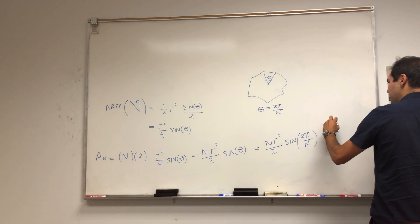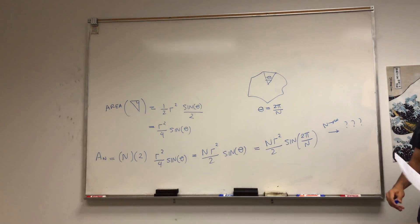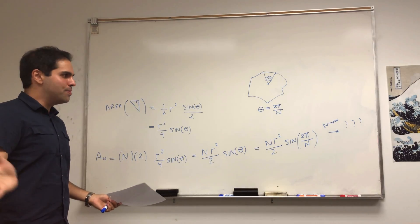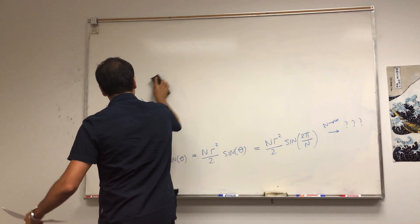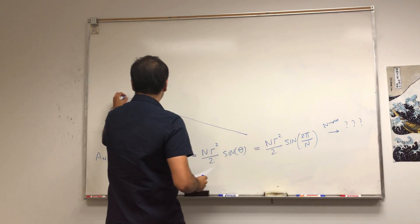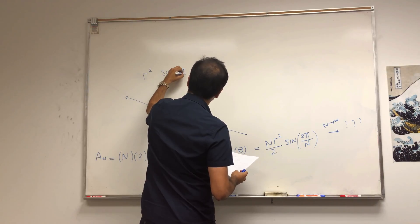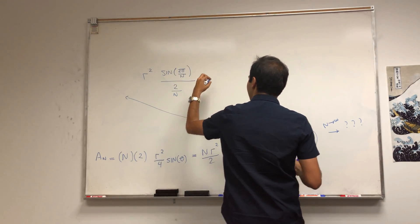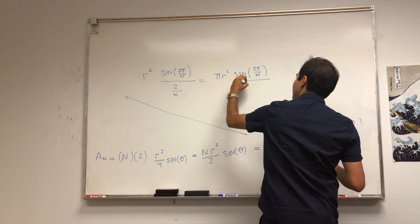Now we want to take the limit as n goes to infinity of A_n = n·r²/2 · sin(2π/n). We have an issue because this is infinity times zero, an indeterminate form. We could use L'Hôpital, but we don't even need to. Let's rewrite it: r² · sin(2π/n) over (2/n), then multiply top and bottom by π to get π·r² · sin(2π/n) divided by (2π/n).